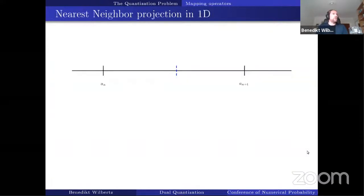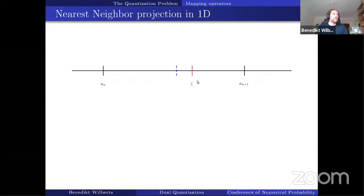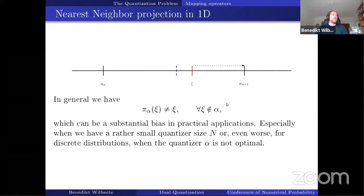Now I want to go back to the one-dimensional setting. Here we have two grid points a_N and a_{N+1}, and the one-dimensional Voronoi cell is just an interval. The blue line is the boundary of the Voronoi cell. If a new realization Xi falls into that Voronoi cell, we map it to a_{N+1}. In general, with the nearest neighbor projection, we are off for nearly all points, though this error becomes smaller as N increases.